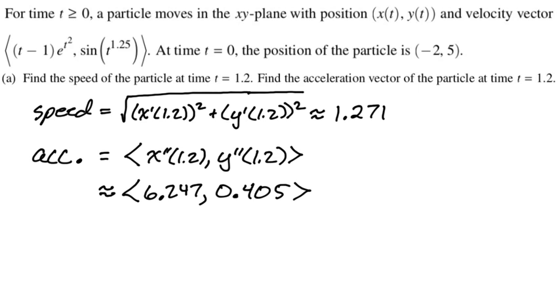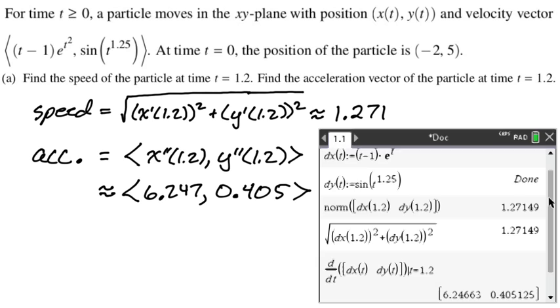It's actually a really nice parametric problem. So here's what I did. I stored them. I did the norm of the vector, or you might want to type it in as the square root of the sum of the squares, up to you. And then I just took the derivative of the velocity vector at 1.2, got my answers. Let's take a look at the next part.